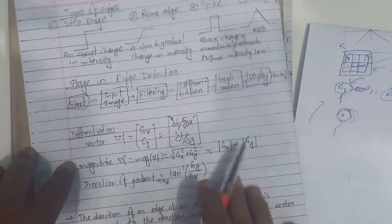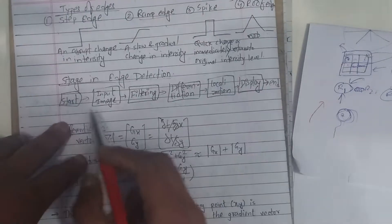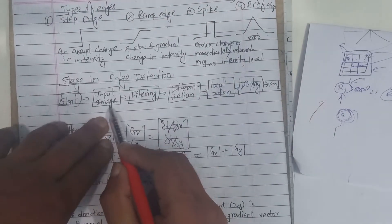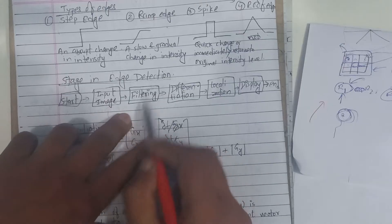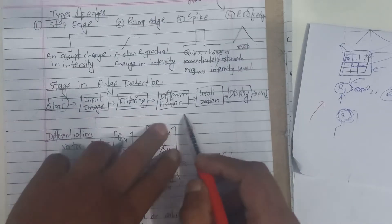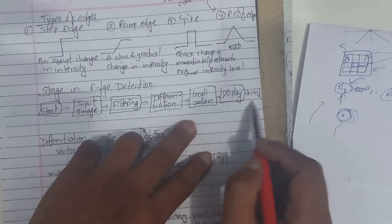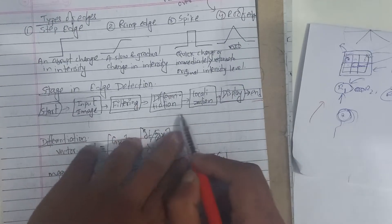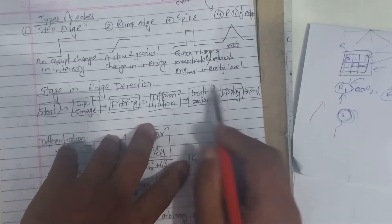For edge detection, start with the input image, then filtering, then differentiation, then localization and display.